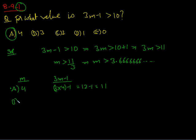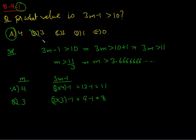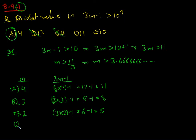Answer choice B is 3: 3 times 3 minus 1 equals 9 minus 1 equals 8 — not more than 10, so B is out. Answer choice C is 2: 3 times 2 minus 1 equals 6 minus 1 equals 5 — not more than 10, so C is out.